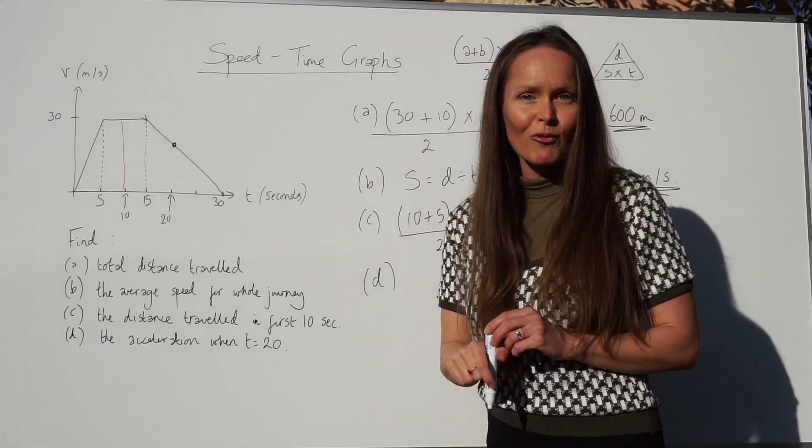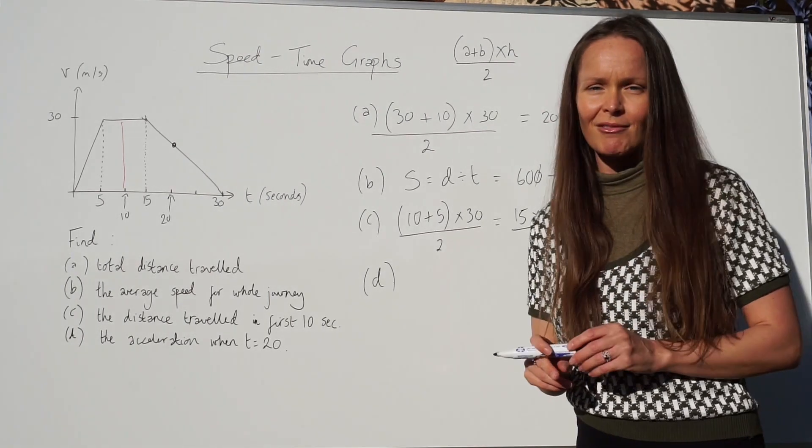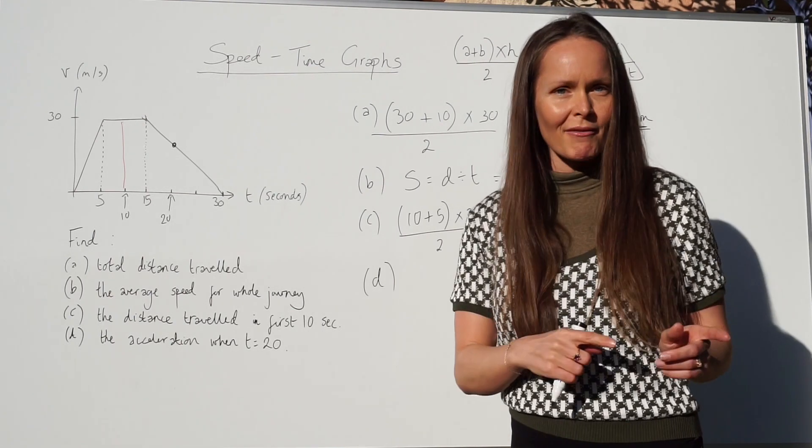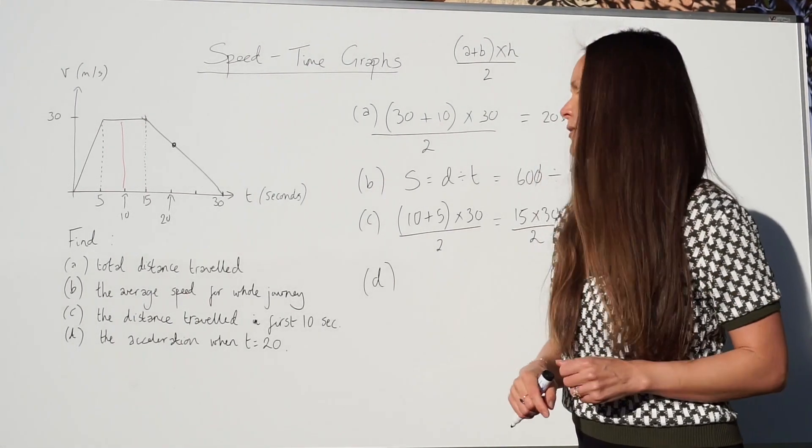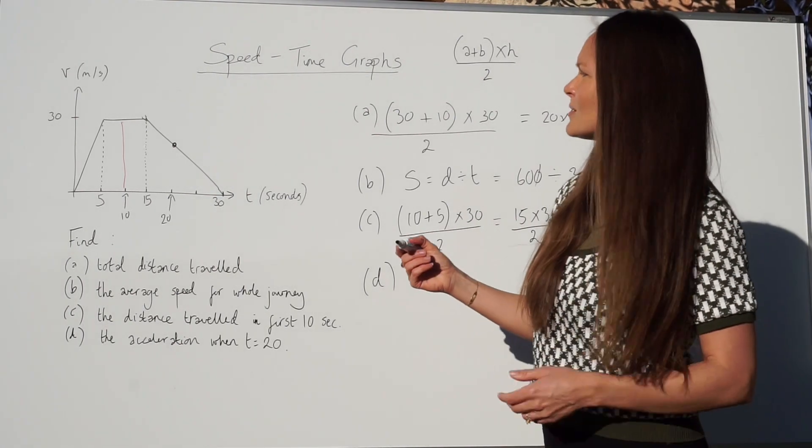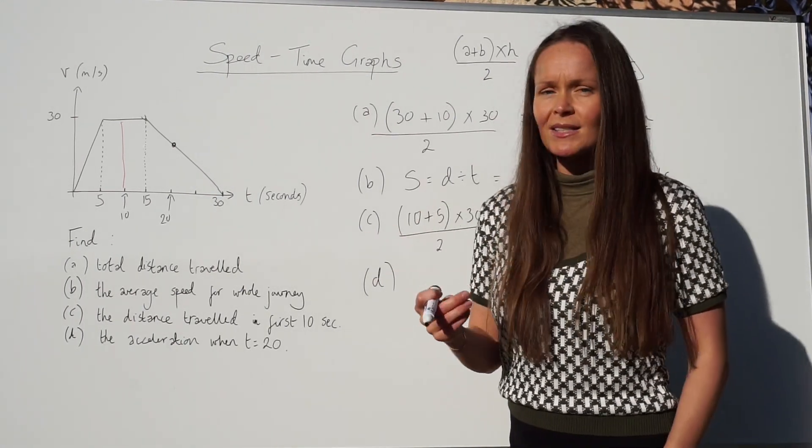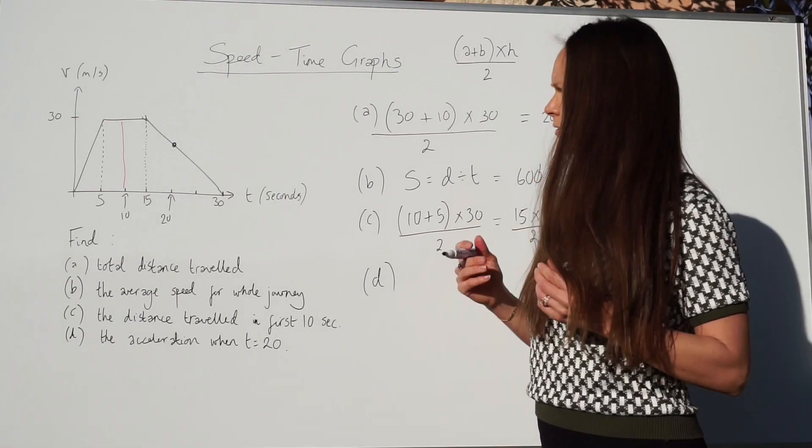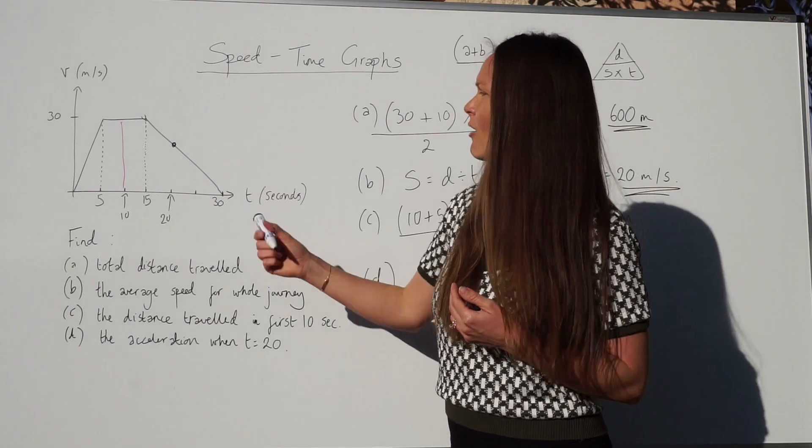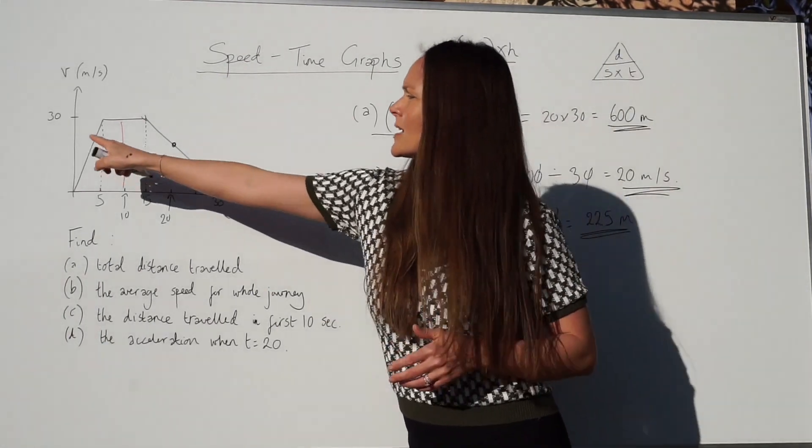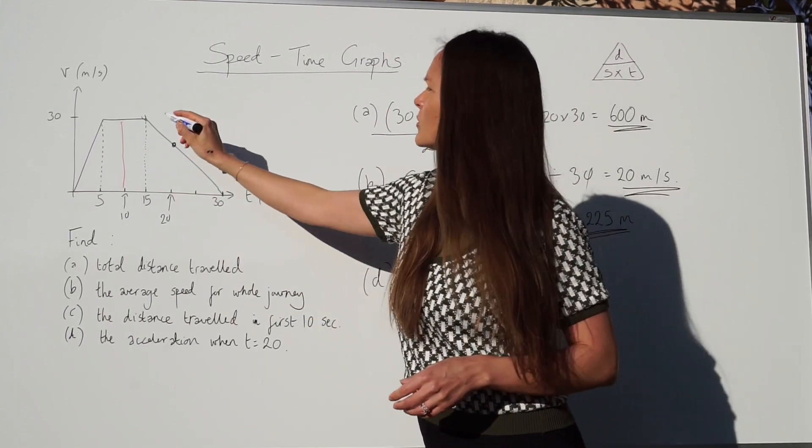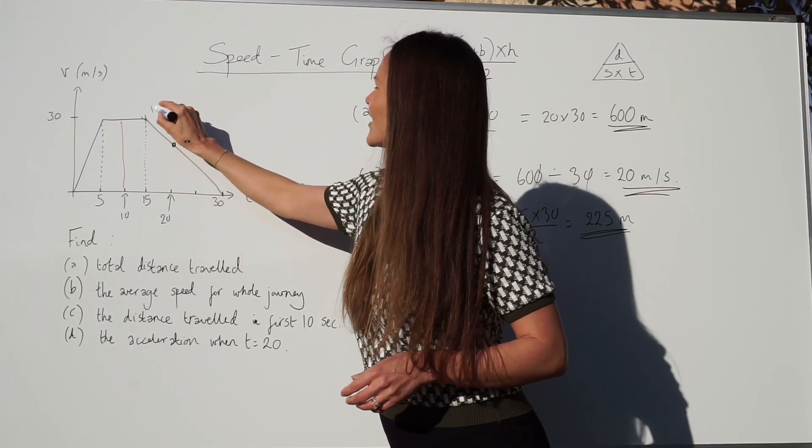I'm going to use a method called rise over run to work out the gradient. If you're not familiar with this method, and you don't know how to work out the gradient, I do have another lesson on that. Now, to work out rise over run, or to use this method, I need to choose two points along this line. And, it doesn't matter which two points you choose. Although, we're a bit limited on this graph question, because we don't have all the units here. We don't know how high all of these points are. So, I'm going to choose this point here, 50 and 30. And, this one down here, 30, 0.